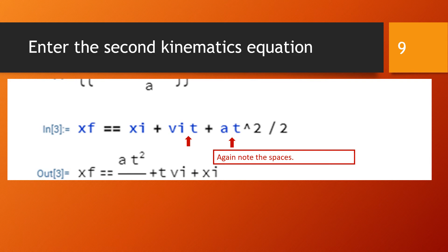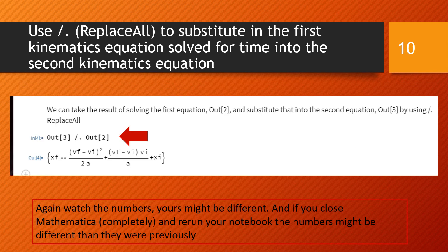So just to recap so far, we introduced the first kinematic equation and that was Out[1], and then we solved that for time and that was Out[2], and then we introduced a second kinematic equation that was Out[3]. Now what we would like to do is take our solution for time Out[2] and substitute that expression for time into all the places that we find time in the second kinematic equation Out[3].